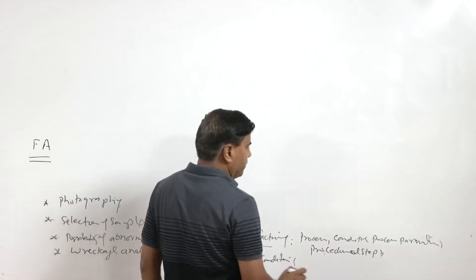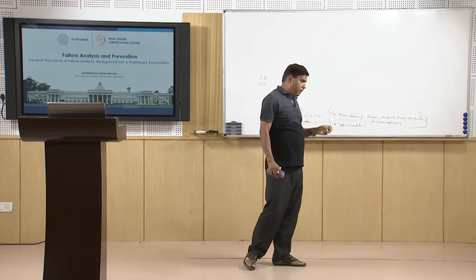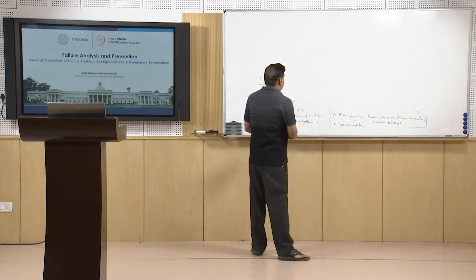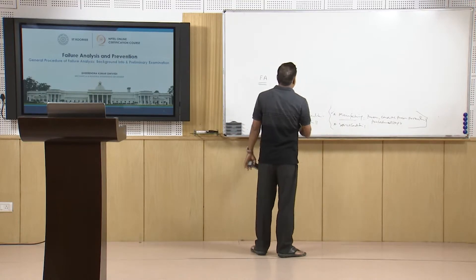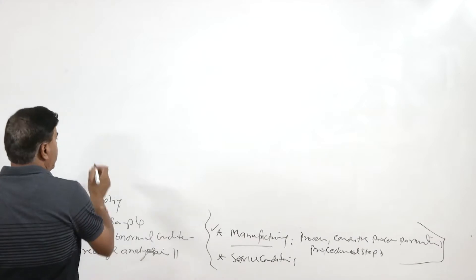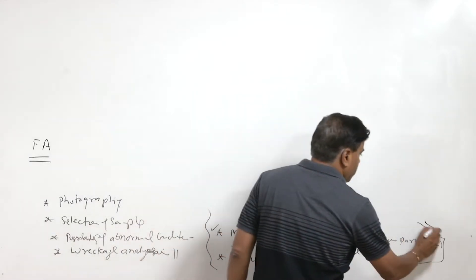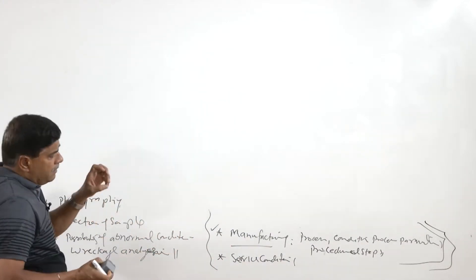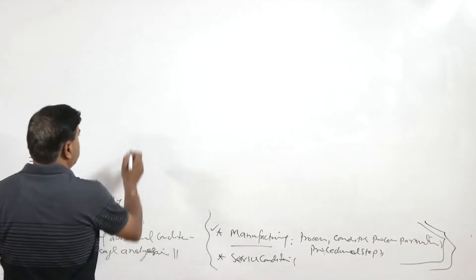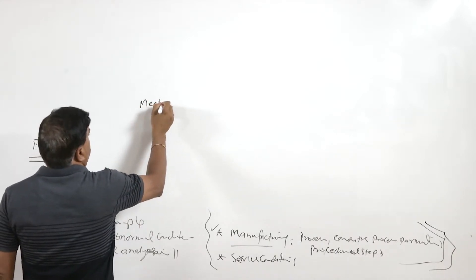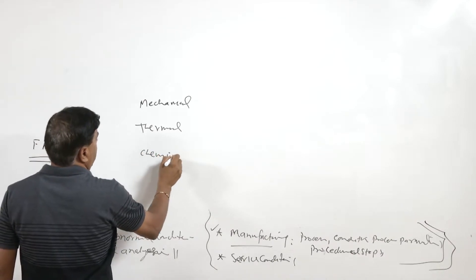Information about the manufacturing processes is also needed. For making any particular product, a large range of processes needs to be applied so that it becomes workable. The entire range of manufacturing processes is grouped under three headings: mechanical manufacturing processes, thermal processing of the component, and chemical processing of the component.